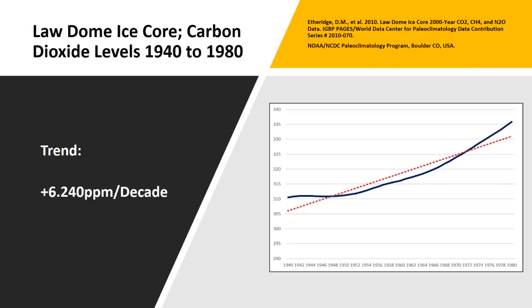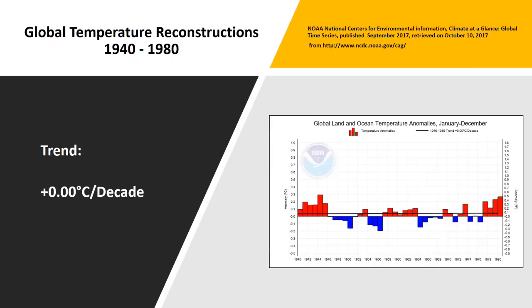We now move to another sub-period, 1940 to 1980. The trend of carbon dioxide levels has almost doubled to 6.24 parts per million per decade. But again, the trend in global average temperature was equal to zero.